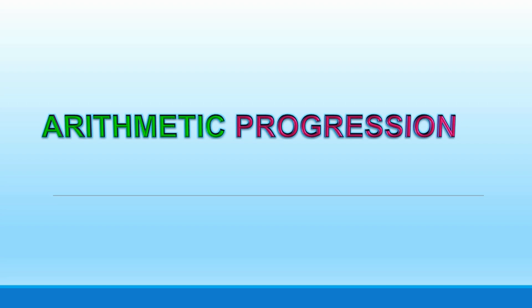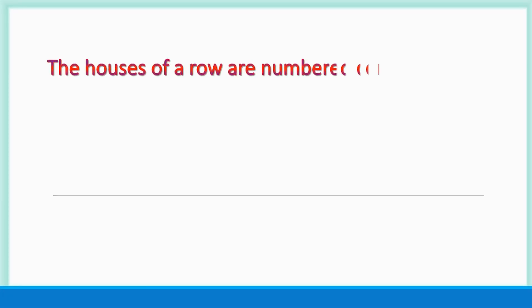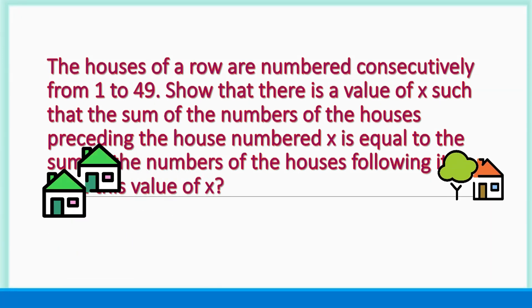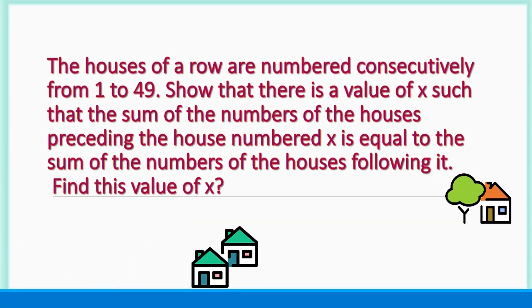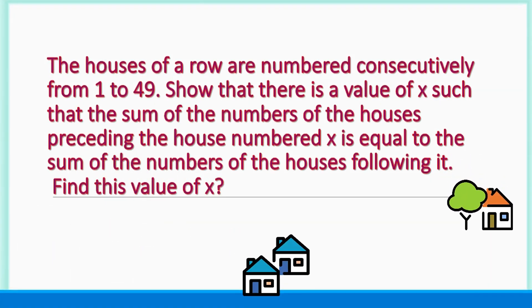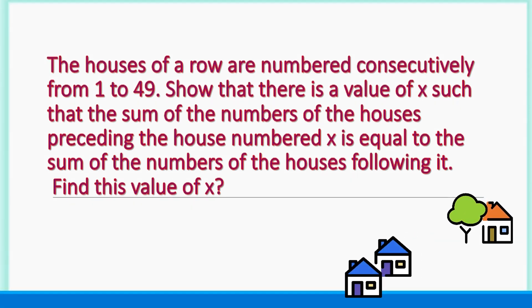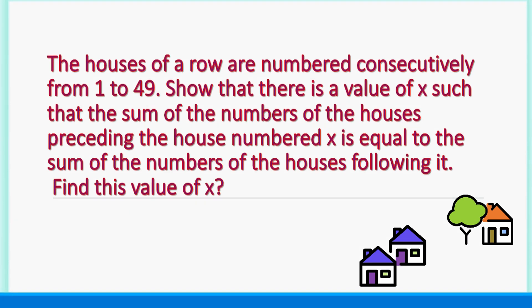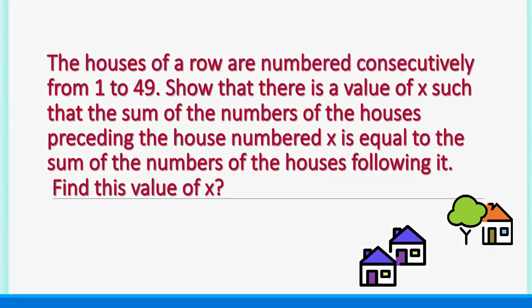Arithmetic progression problem: The houses of a row are numbered consecutively from 1 to 49. Show that there is a value of x such that the sum of the numbers of the houses preceding the house numbered x is equal to the sum of the numbers of the houses following it. Find the value of x.